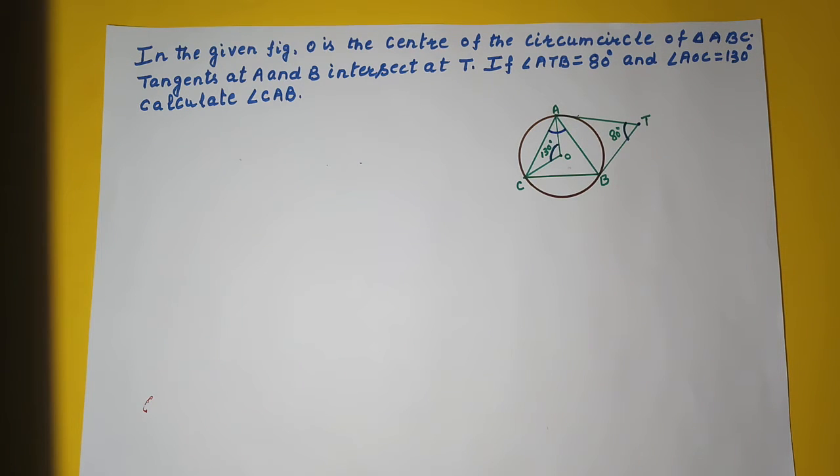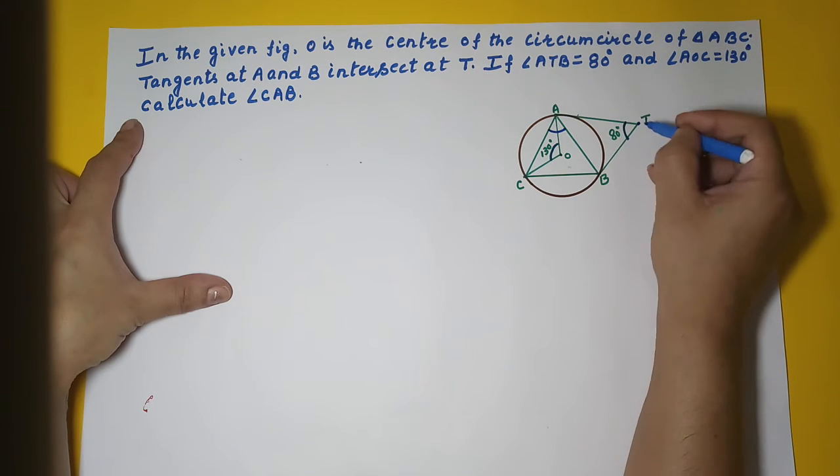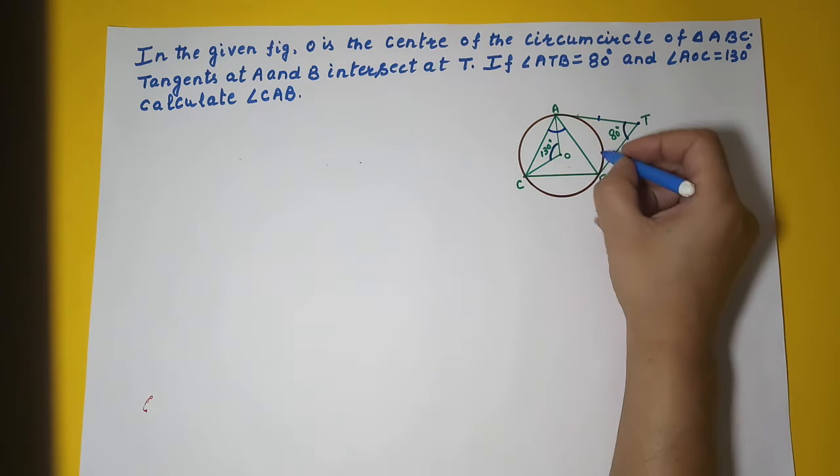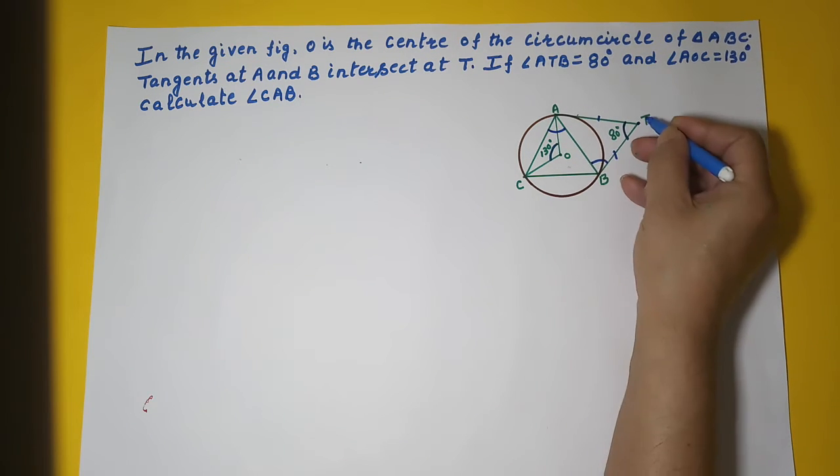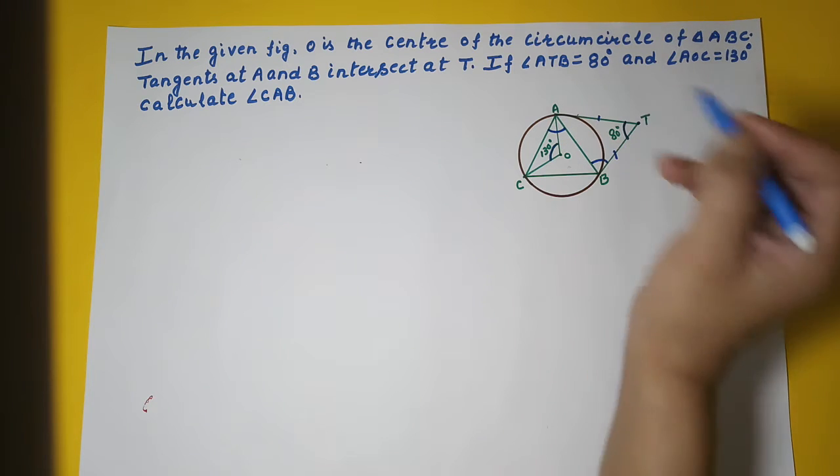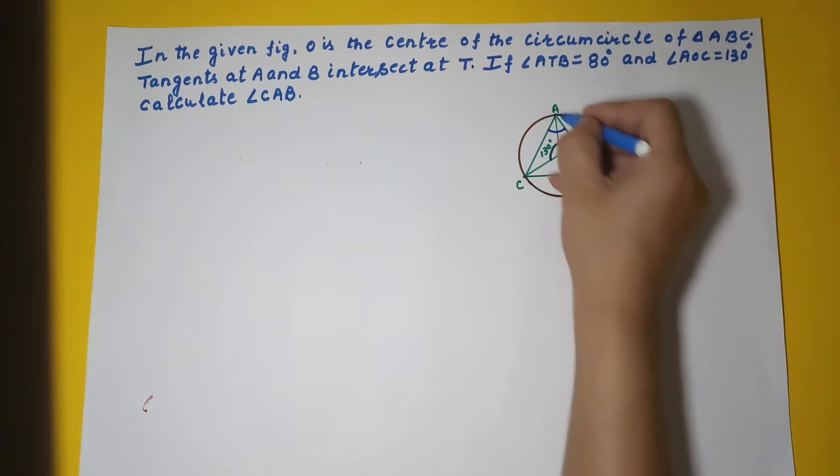Now how do we do that? We know that TA is equal to TB. Lengths of the tangents drawn from the external point are equal. So in this triangle ABT, if TB is equal to TA, then this angle TBA will be equal to TAB.